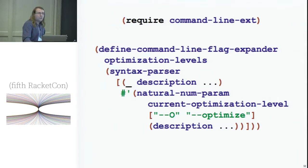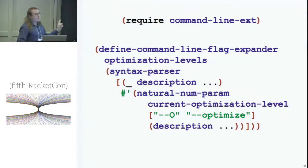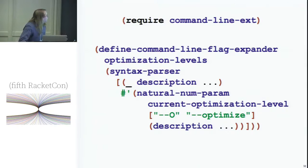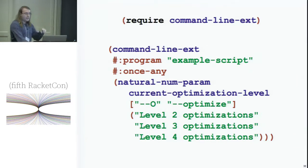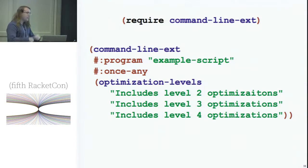If we want to make our own command line flag expander — say we're running a whole ton of compilers and keep wanting to pass in optimization levels — we can make a flag expander specifically for dealing with optimization levels. It's just a little sugar around the natural-num-param flag expander that assumes you're using a current-optimization-level parameter and has a standardized flag name. That old program for setting various optimization levels gets turned into just writing 'optimization-levels' and listing out what their names are. It takes care of toggling the parameter, doing all the settings, doing all the expansion, making it into something the base Racket command line grammar understands.